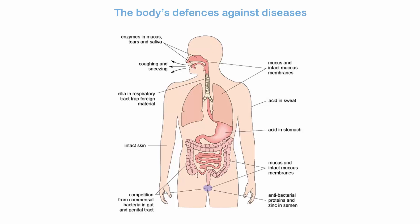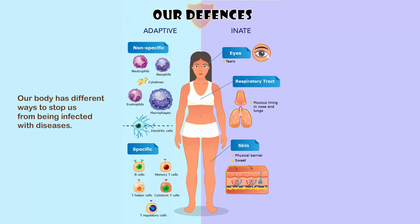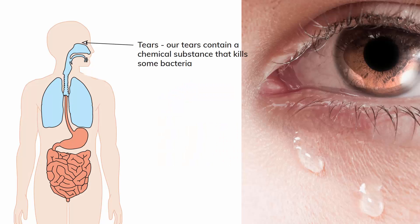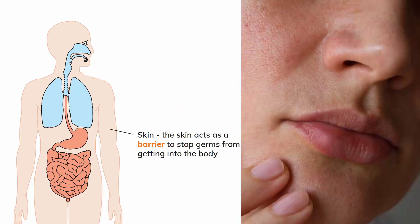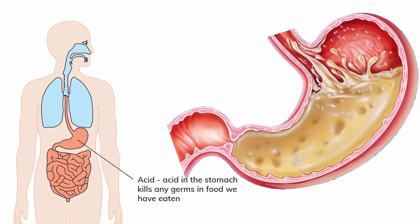The body's defenses against diseases: our body has different ways to stop us from being infected with diseases — we call these the body's defenses. Tears contain a chemical substance that kills some bacteria. Sticky mucus in our noses, windpipe and other air passages traps germs. The skin acts as a barrier to stop germs from getting into the body. Acid in the stomach kills any germs in food we have eaten.